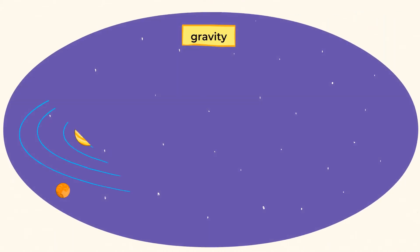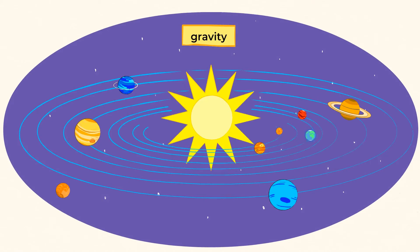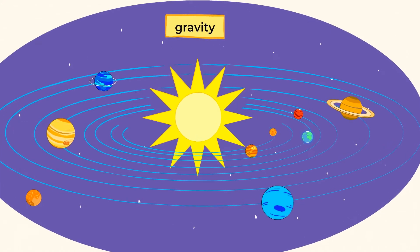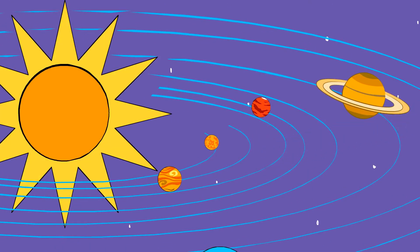Gravity is also what holds the earth and all the rest of the planets in our solar system in their orbits around the sun. Thank goodness for that. Or else our earth would spin away from the sun and float out into outer space.